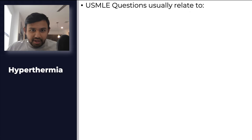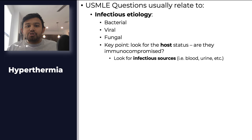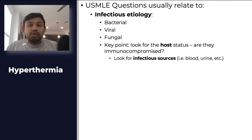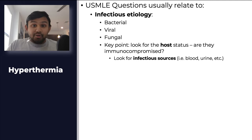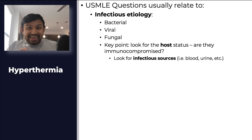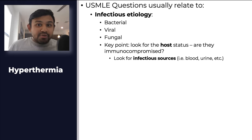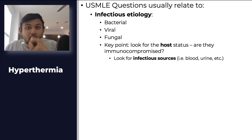When you're thinking about hyperthermia, USMLE questions are usually related to an infectious etiology — bacterial, viral, or fungal infections. A key point is to look at what kind of host you're dealing with. Going back to our test question, the cadaveric renal transplant patient on tacrolimus and steroids is an immunocompromised host. Also look for the source of infection — is it pneumonia, UTI, or a septic joint? These are important clues to hone in on.